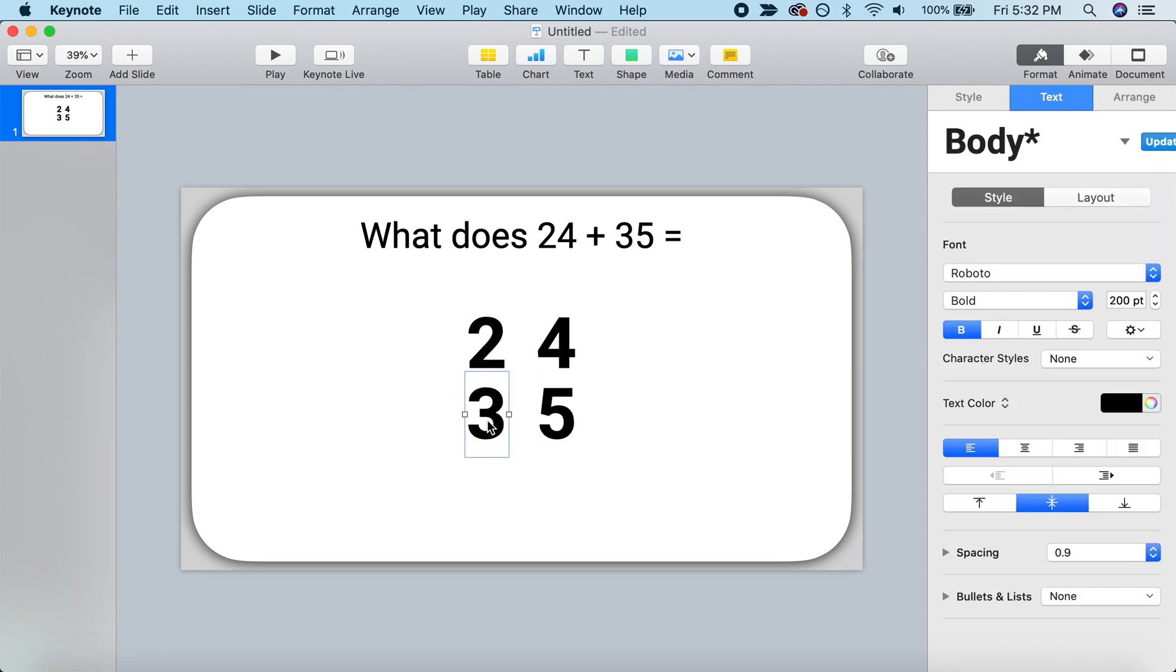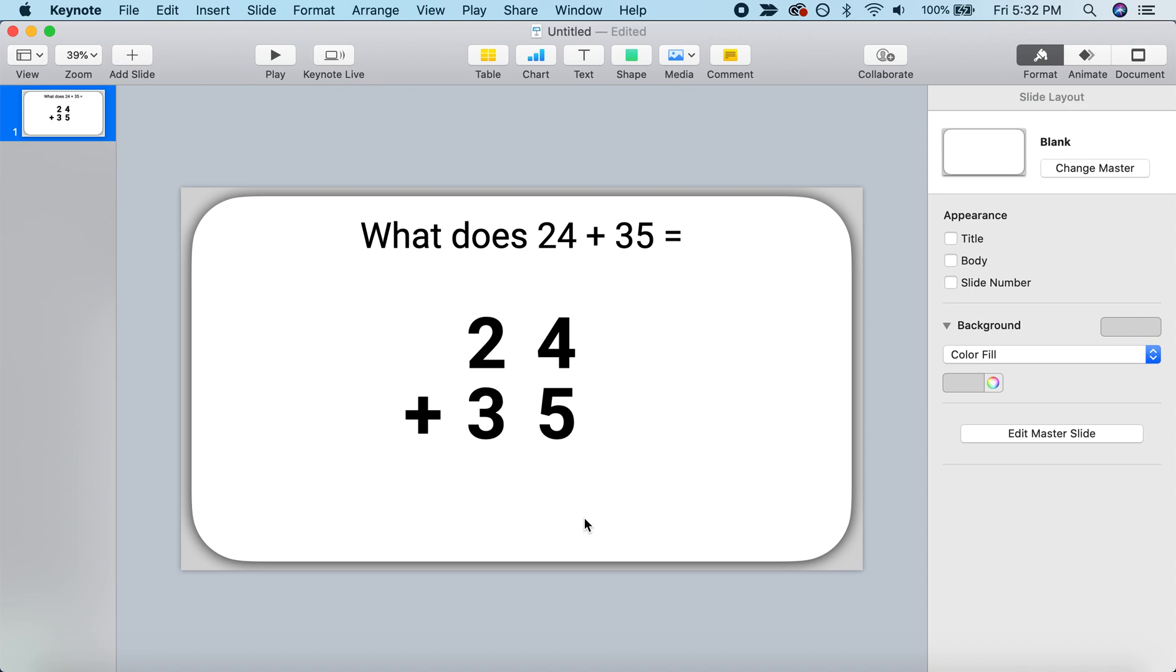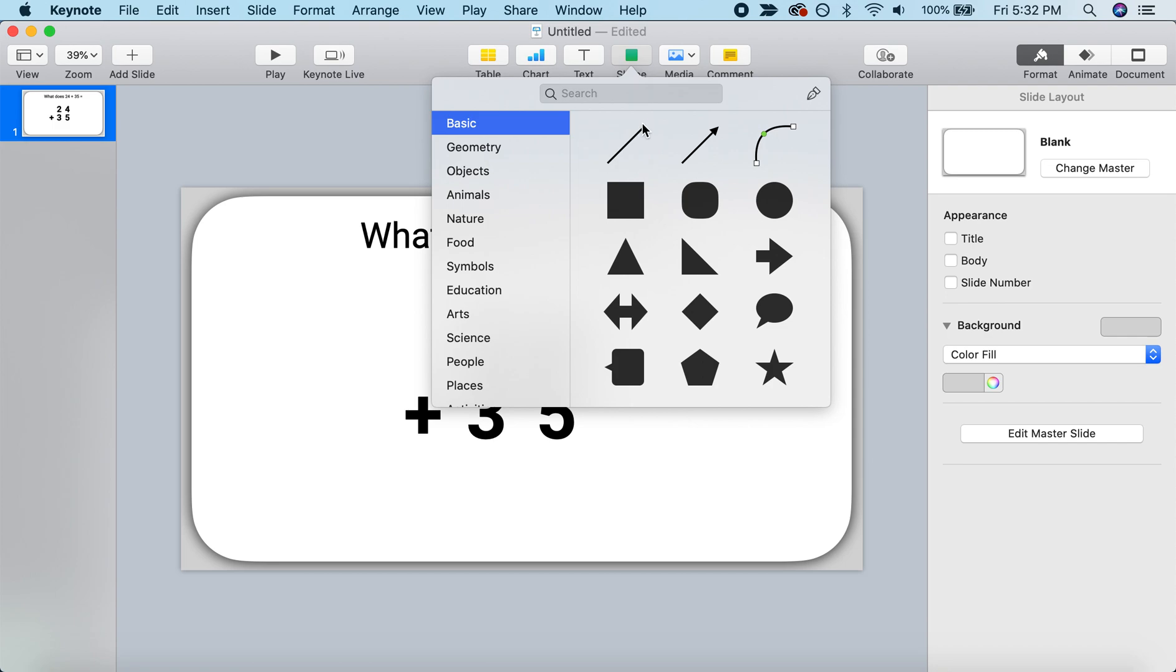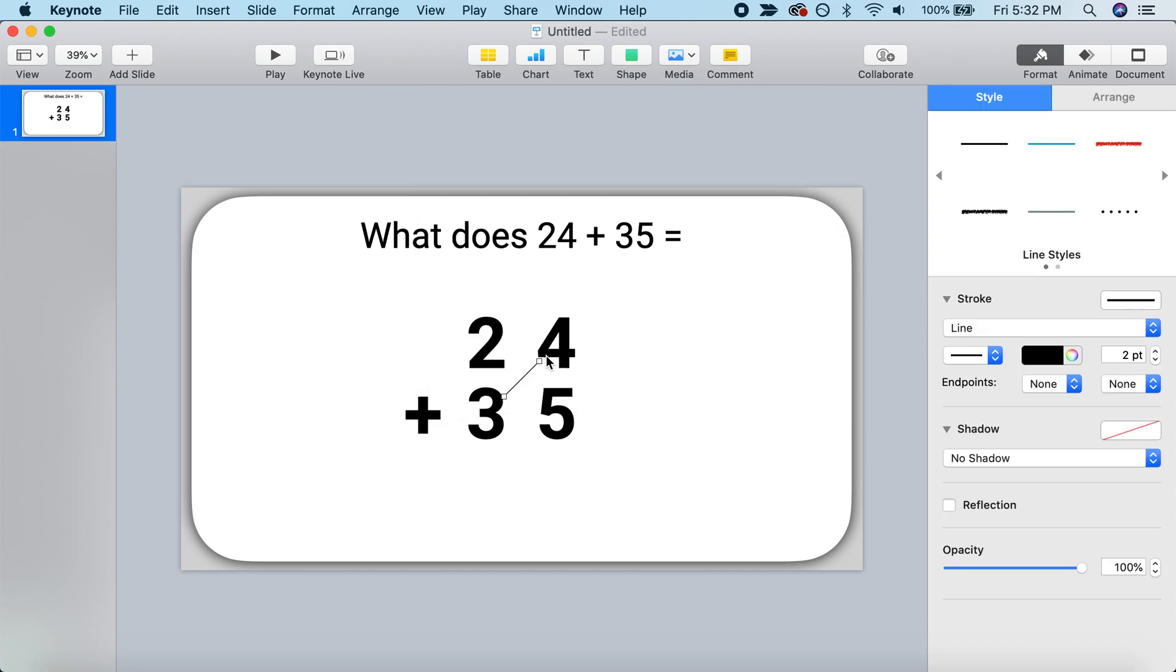I can do the same thing to make my plus symbol. So I'm just going to copy one of these, drag it to the side, and make it a plus. Now, let's draw that line underneath our problem. So we'll add a shape and we'll add a line. Let's straighten that out and put it in place. And I think this will look a little bit better if this line is proportional in size to the actual numbers themselves. So I'm going to make it thicker. Instead of 2 points, let's do 15. Or maybe that's a little big. Let's do 12. Perfect.